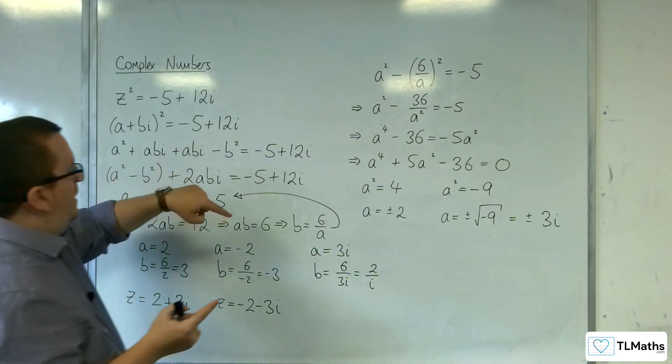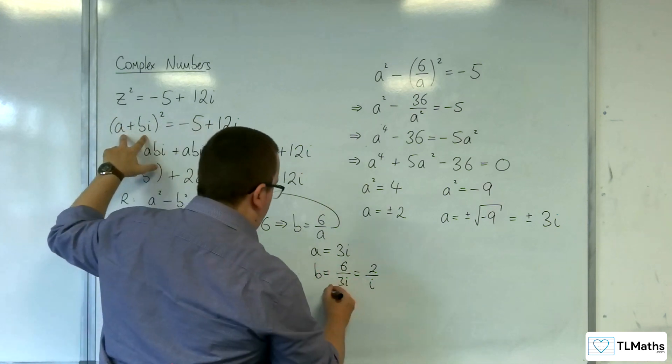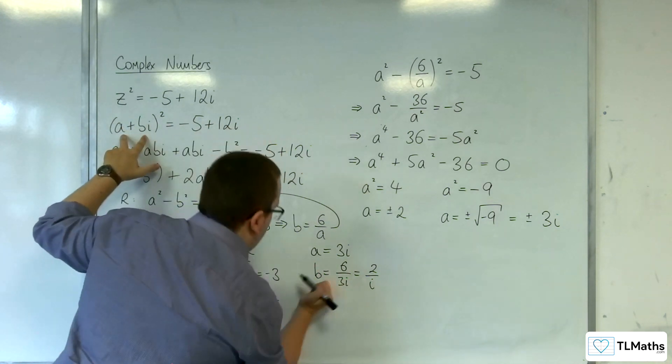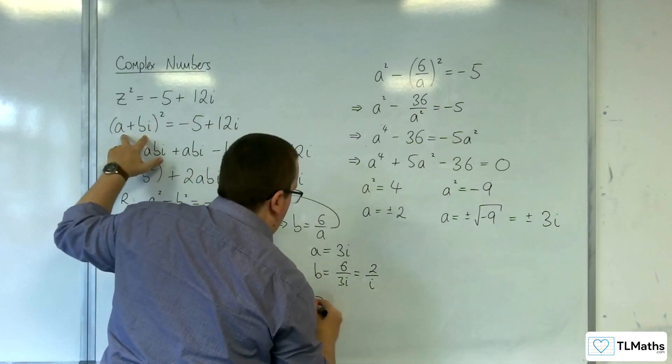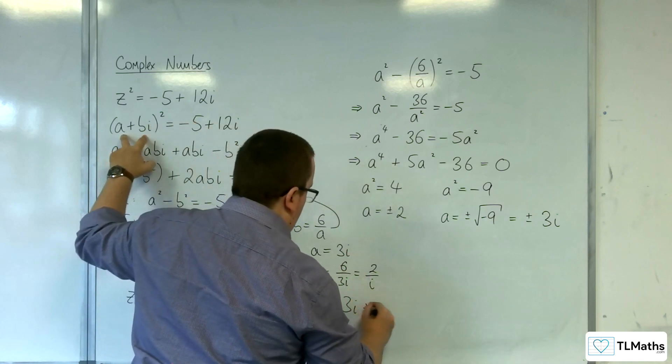And let's substitute that directly in. So, if I've got 3i, so z is equal to a+bi.